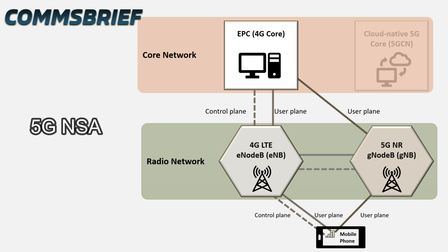Let's make a distinction between the user plane and the control plane. The control plane is for functions like signaling, and the user plane is for the actual data pipe that the customer gets. In non-standalone 5G, the end-user device — for example, the mobile phone — benefits from 5G connectivity, whereas the signaling takes place using the 4G network. The phone in 5G NSA establishes a radio connection with both 4G LTE and 5G NR base stations. Both base stations are connected to the 4G core network, the Evolved Packet Core or EPC. As a result, user-level functions like mobile data and quality of service come from a 5G base station called the gNodeB and a 4G base station called the eNodeB. The 4G base station eNodeB manages all the control functions.